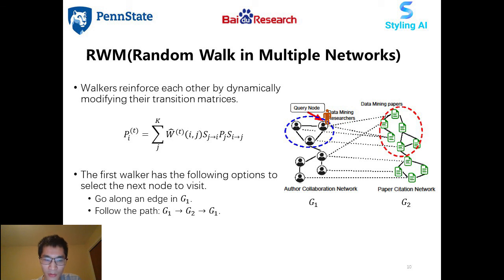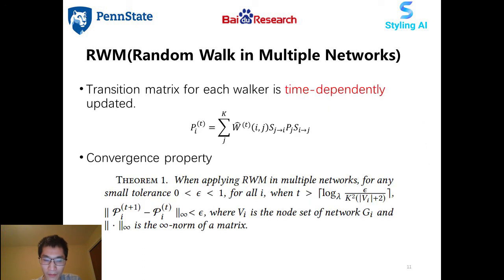Here is an example to intuitively demonstrate a walker's behavior in the proposed model. If G1 and G2 are highly relevant, then the walker in G1 has two options to select the next node to visit: it can go along an edge inside G1, or it can first visit a node in G2 via a cross-network edge and then go back to G1. Due to the reinforced mechanism, the transition matrix for each walker is time-dependently updated. We have theoretically shown that the transition matrix for each walker converges.